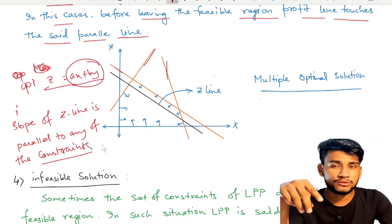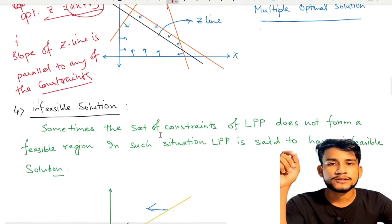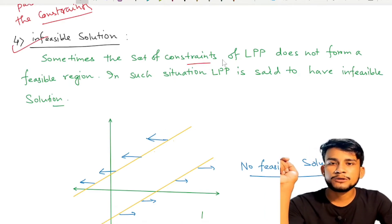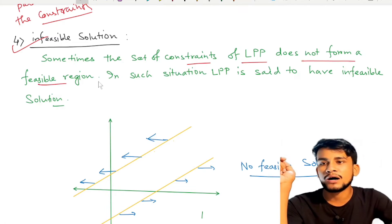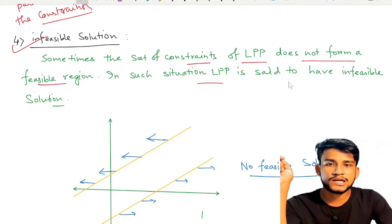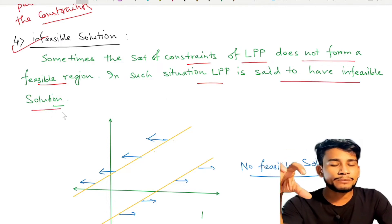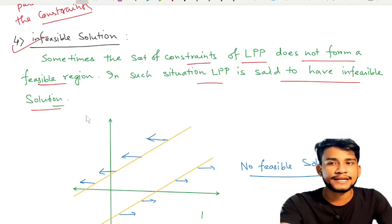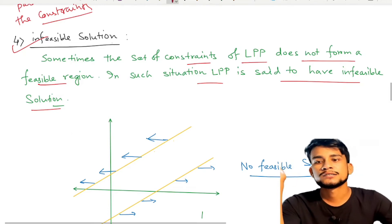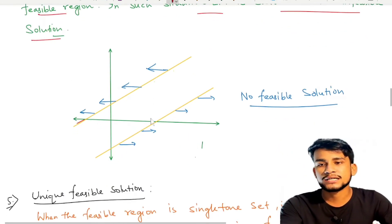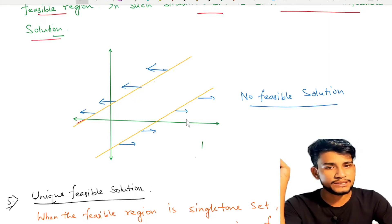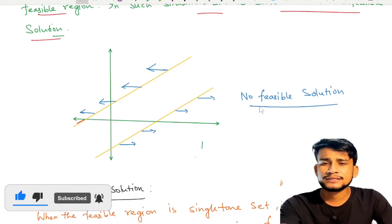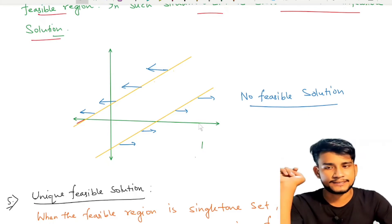Case 4 is infeasible solution. Sometimes the set of constraints of an LPP does not form a feasible region. In such a situation, the LPP is said to have an infeasible solution. This means if the constraints are inconsistent, we have an infeasible solution. For example, if two constraint lines are parallel and their arrow sides do not overlap, there is no feasible solution.